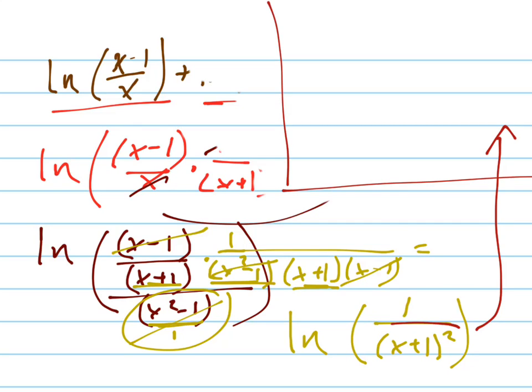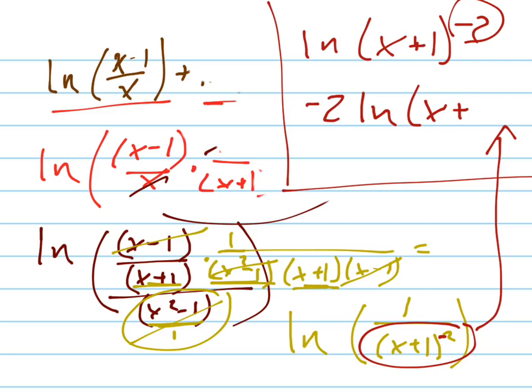So this is going to be that to the negative 2. Right? It's going to be the natural log of x plus 1 to the negative 2. And now, what can I do with the negative 2? Bring it to the front. Natural log of x plus 1.